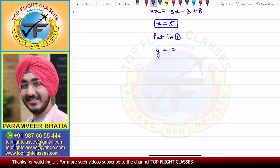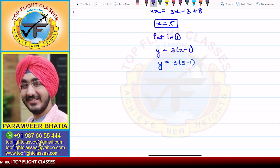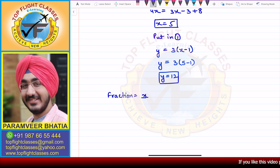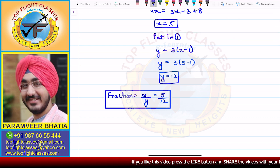Substituting x equals 5 back into equation one: y equals 3 times (5 minus 1), which is 3 times 4, so y equals 12. Therefore, the fraction x over y comes out to be 5 over 12, and that is the answer.